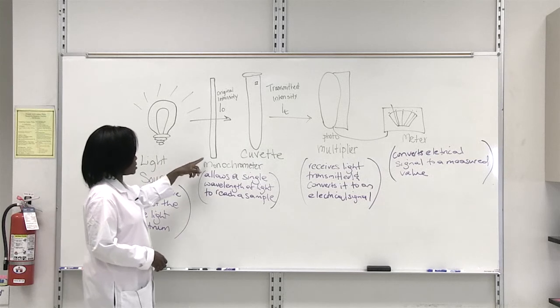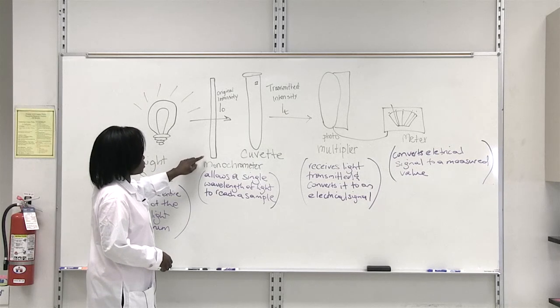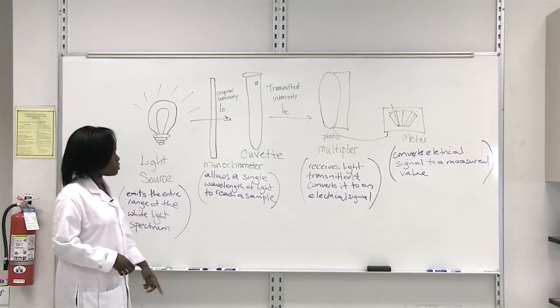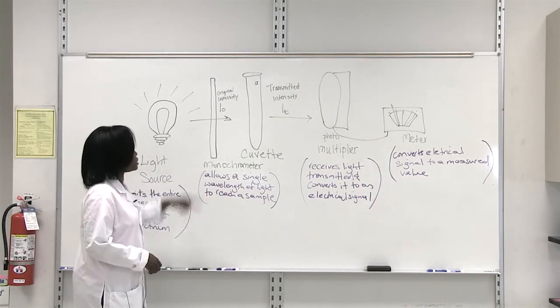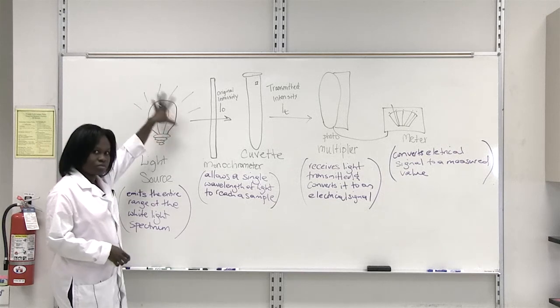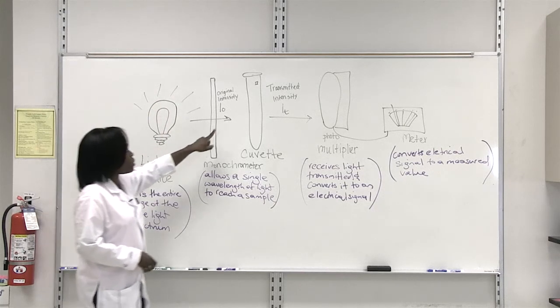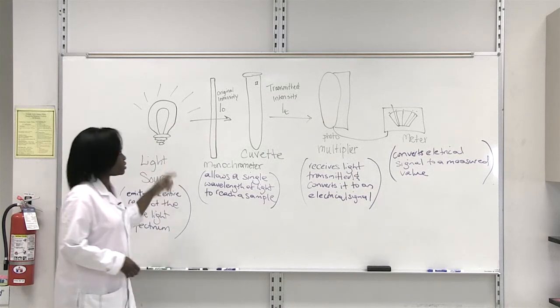But what is important here is that the spectrophotometer also has what is called a monochromometer. This monochromometer is able to filter the different spectra of this light and just allow one wavelength to pass through.